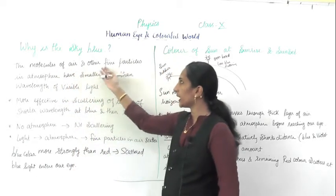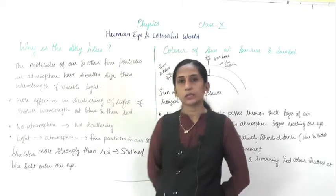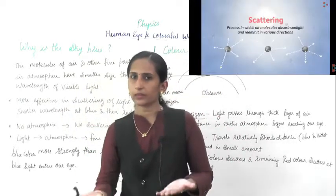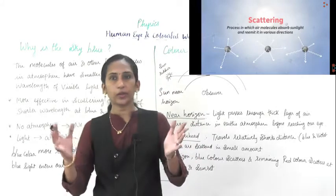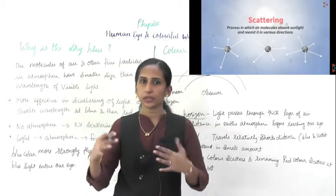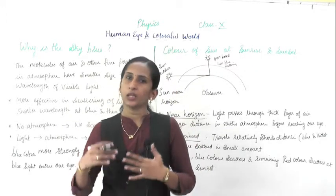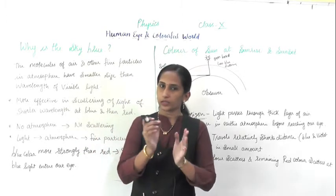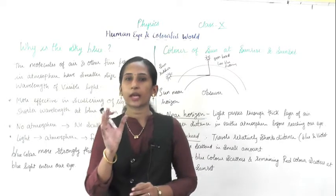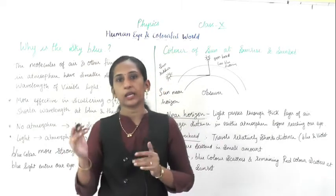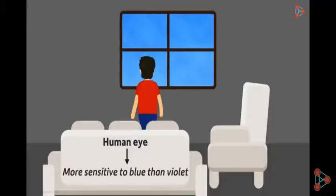The molecules of air and other fine particles in the atmosphere have a smaller size than the wavelength of visible light. Because of the scattering, out of 100% of sunlight, 90% comes as it is towards the Earth, and 10% falls on the fine dust particles and scatters. When it falls on those particles, it scatters the light and the shorter wavelength — that is the blue color — is spread everywhere. That is why you can see the sky is blue.